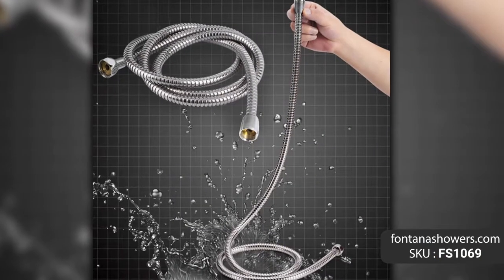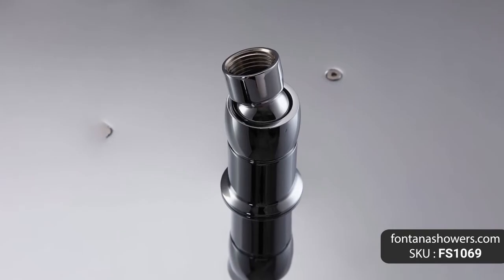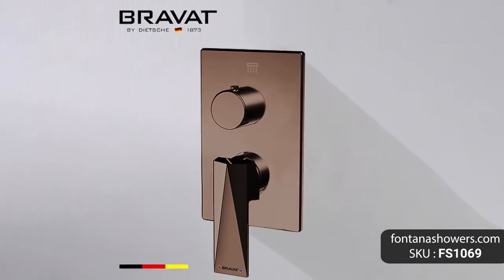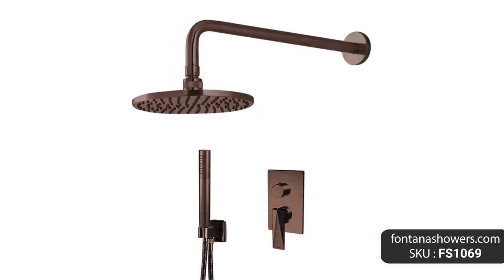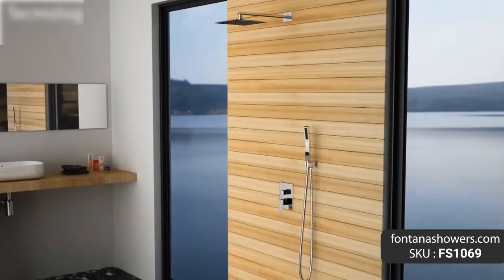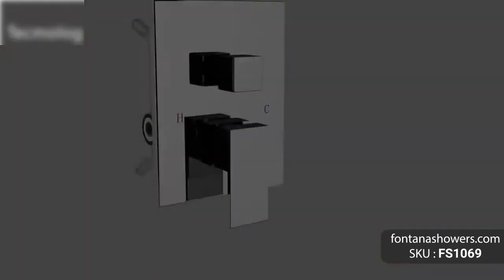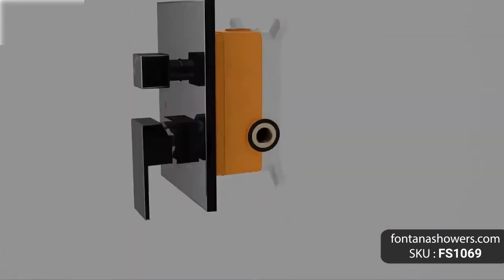Bravat wall mounted shower set with valve mixer, 2-way concealed in light oil rubbed bronze, product code FS1069. The Bravat light oil rubbed bronze wall mount shower set with thermostatic valve mixer 2-way concealed is one of the most